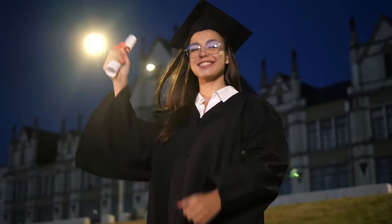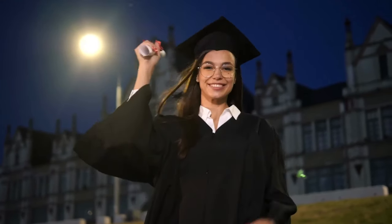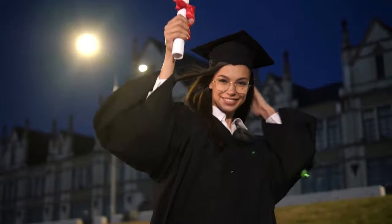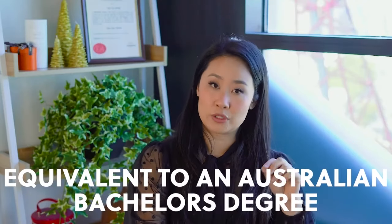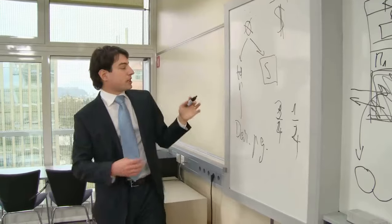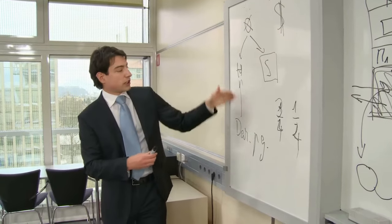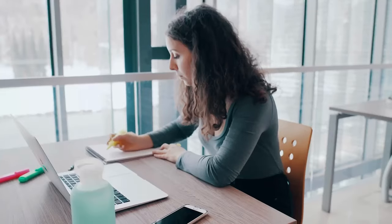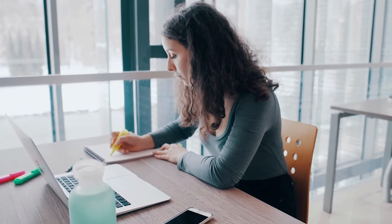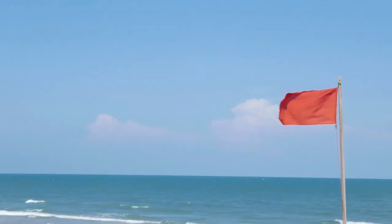So if you have an overseas degree — that's a bachelor degree at the required level — it has to be equivalent to an Australian bachelor's degree. An Australian bachelor's degree is taught at a certain level and is definitely over a course of three years. If you did an overseas degree and they call it a bachelor but you only studied it for two years, I would say that's a red flag and it may not be equivalent to an Australian degree.